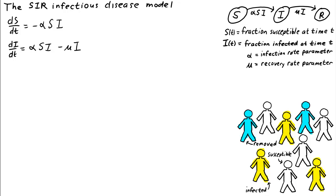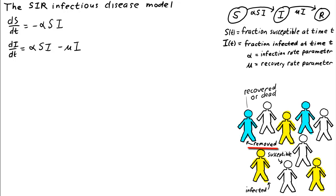The SIR infectious disease model describes how susceptible individuals can become infected when coming into contact with an infected person, and how infected individuals recover and thereafter become immune. Alternatively, infected people could die from the disease. As long as dead or immune people cannot communicate or catch the disease, they are removed from future consideration and have the same influence on model dynamics. Therefore, we call this third class the removed class.